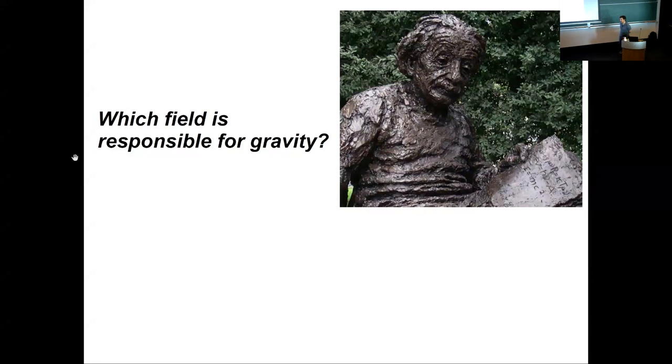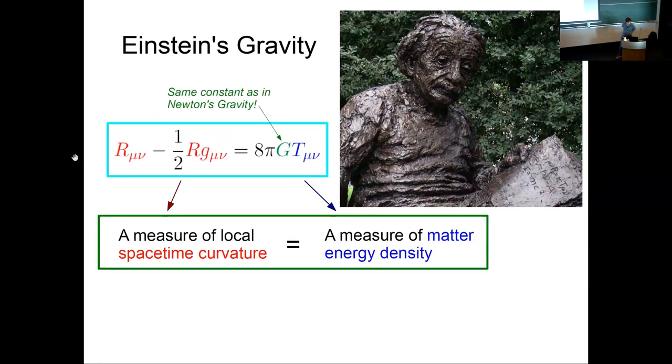The field model was super successful in capturing features of electromagnetism, and people were hoping that you could do the same thing for gravity. So what's the field? What are the properties of the field that carries the pull of Earth on the moon, the sun on Earth? Due to efforts of this gentleman and some of his contemporaries, we have the modern, most fundamental description of gravity that works that we know of, called General Theory of Relativity.